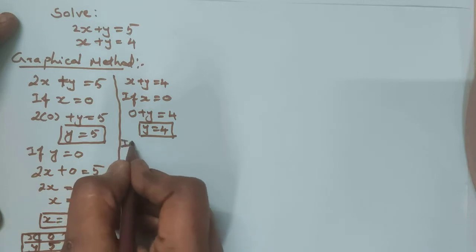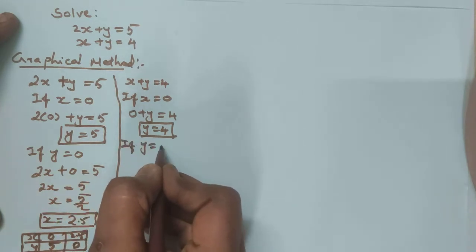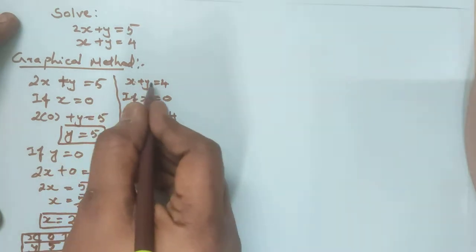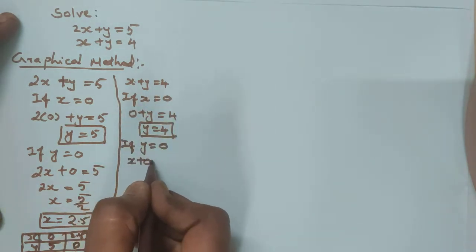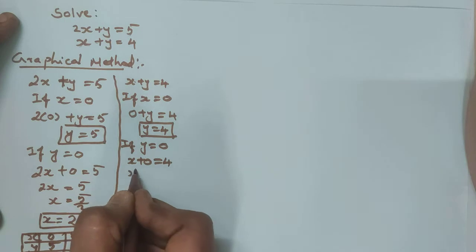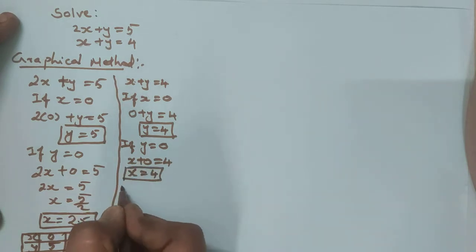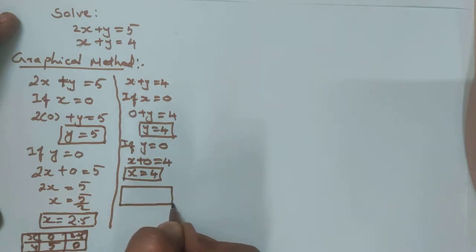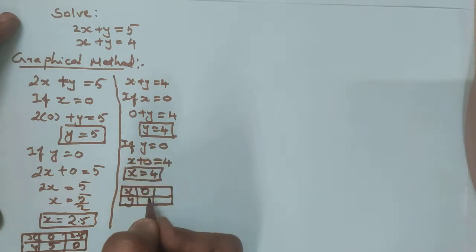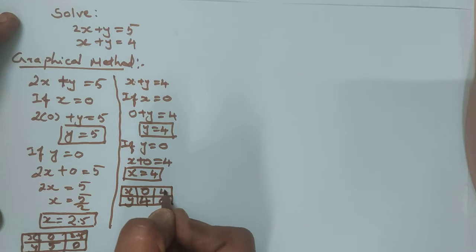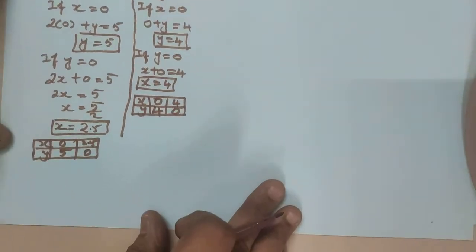Next, consider that y is equal to 0. In this equation, if you substitute y as 0, x plus 0 is equal to 4, so x is equal to 4. Write the values in the table. This is x and y. If x is equal to 0, y will be 4. If y is equal to 0, x will be 4. Now you should plot these points in the graph.